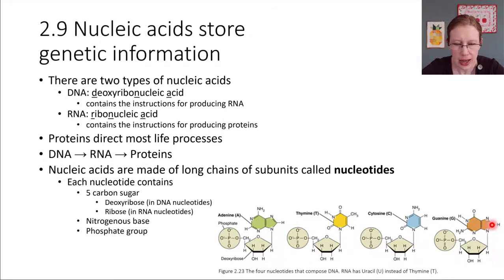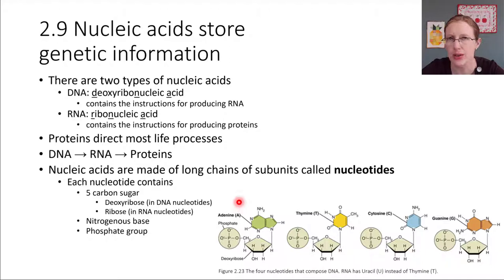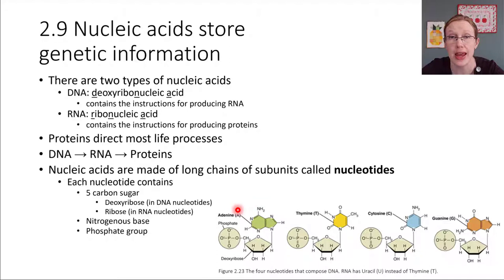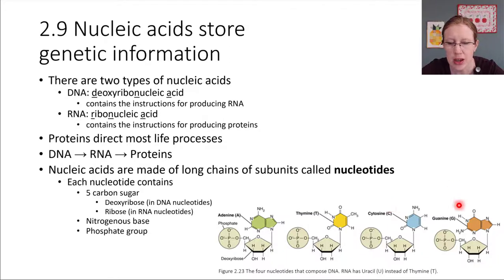In DNA, four different nucleotides are possible, and they are often symbolized with a single letter: adenine (A), thymine (T), cytosine (C), and guanine (G).